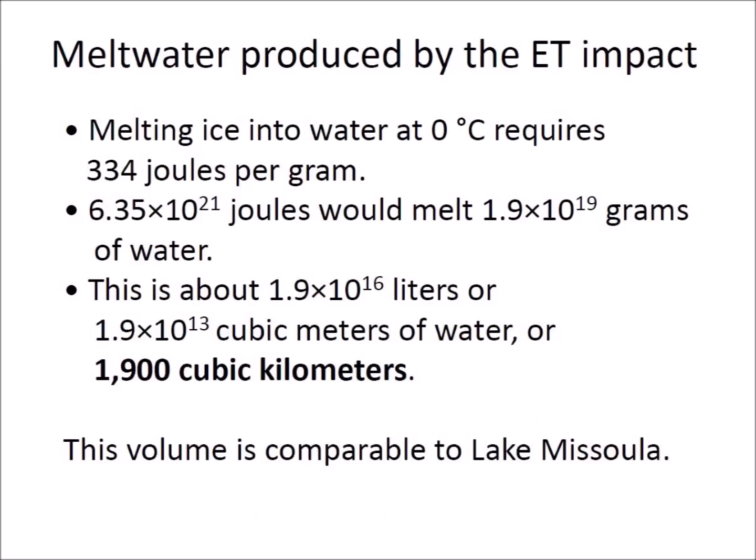Melting ice into water at zero degrees Celsius requires 334 joules per gram. If the heat produced by the extraterrestrial impact was equal to the energy for producing the Carolina Bays, then 6.35 × 10²¹ joules would melt approximately 1.9 × 10¹⁹ grams of water, which is about 1,900 cubic kilometers. This volume is comparable to Lake Missoula.